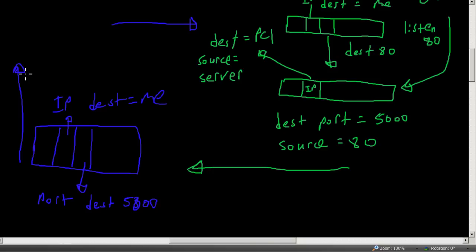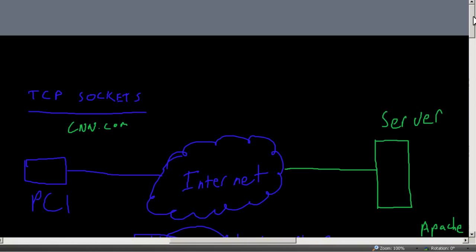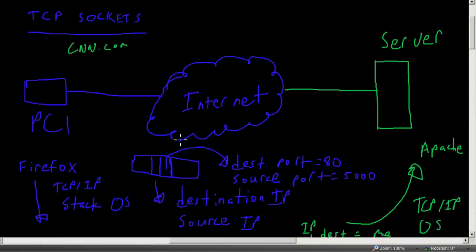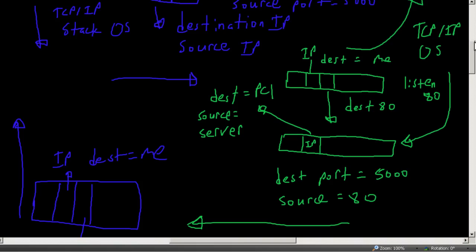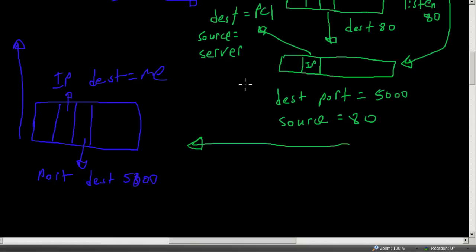And that's how we get our web page. You can see a lot is going on even for a simple application like web browsing. But really it's quite simple — it's just an IP address connected to a port number, and on the other side those numbers are flipped around. The server knows the packet is meant for Apache, creates a reply packet, and sends it back.